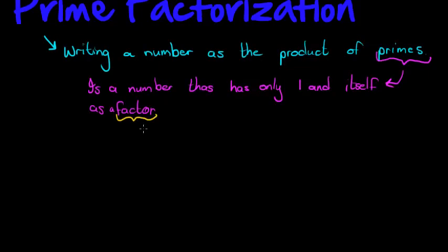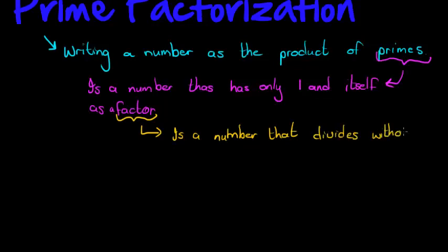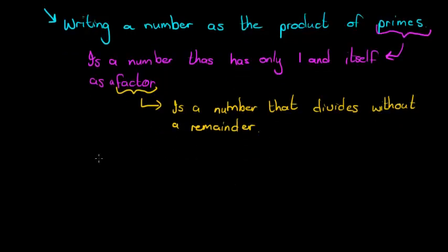So what is a factor? A factor is a number that divides without a remainder. For example, 2 is a factor of 8 because 2 can divide into 8 without a remainder. So a factor can divide without a remainder.